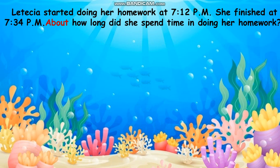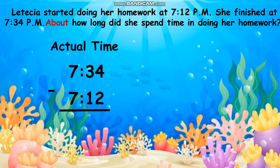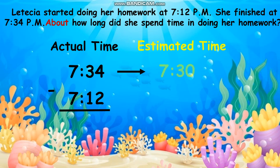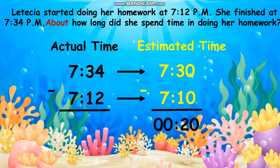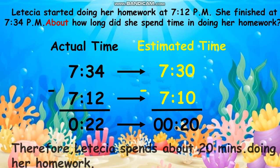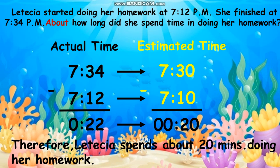Another example: Letitia started doing her homework at 7:12 PM and finished at 7:34 PM. About how long did she spend doing her homework? By estimating, 7:34 rounds to 7:30, and 7:12 rounds to 7:10. 7:30 minus 7:10 is equal to 20 minutes. To check, subtracting the actual time gives a difference of 22 minutes, which when rounded becomes 20. Therefore, Letitia spends about 20 minutes doing her homework.